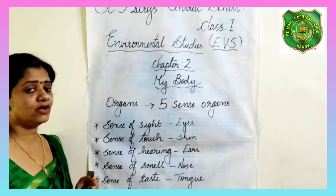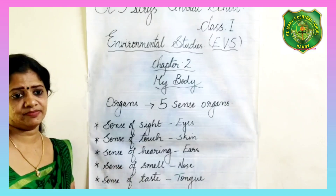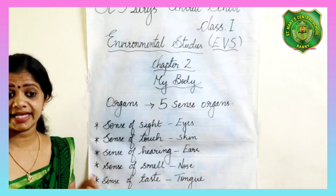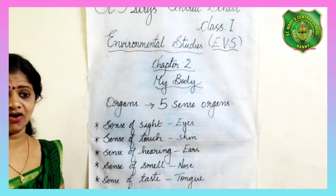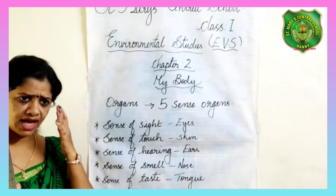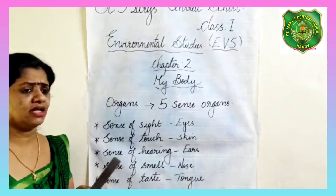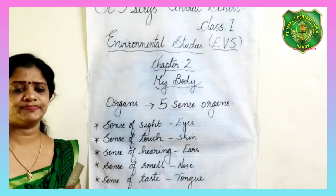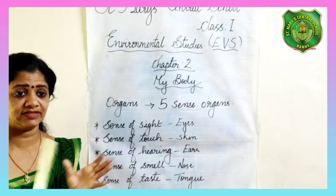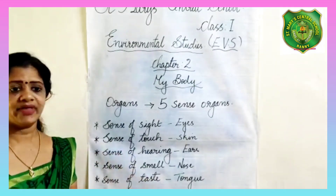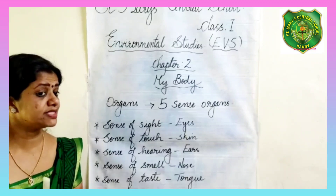External organs are organs which appear externally. They are called external organs. For example, eyes, ears, nose, tongue, and hands. External organs are broadly divided into three parts: head, trunk, and arms and legs.